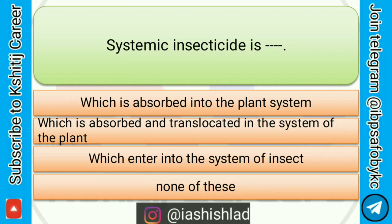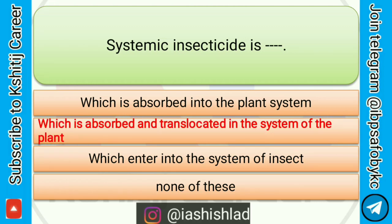Systemic insecticide is. Options are: which is absorbed into the plant system, which is absorbed and translocated in the system of the plant, which enters into the system of the insect, none of these. Correct answer is which is absorbed and translocated in the system of the plant.